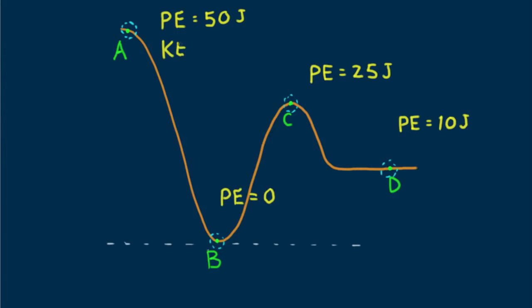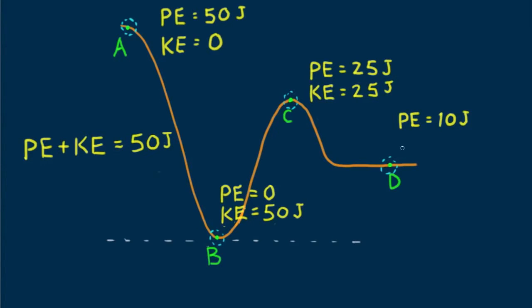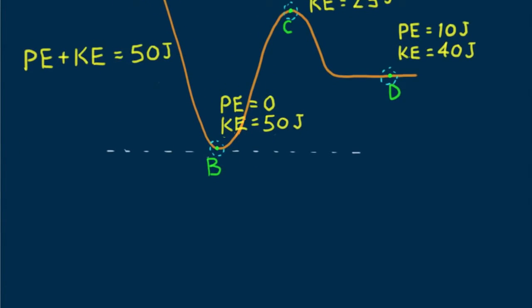We can begin at point A where kinetic energy is 0 because the bead is at rest there. That tells us the total energy is 50 joules at each point. At point B, kinetic energy is 50 joules where potential energy is 0. At point C, where potential energy is 25 joules, kinetic energy is also 25 joules. At point D, where potential energy is 10 joules, kinetic energy must be 40 joules. Along the wire, the sum of potential and kinetic energies is the same — energy is conserved.